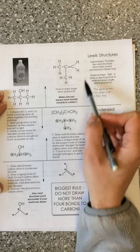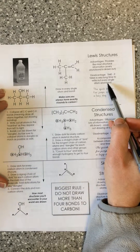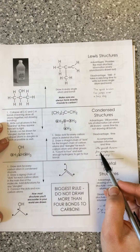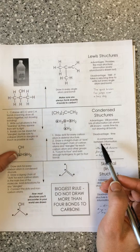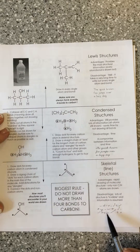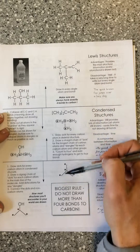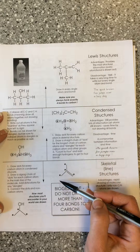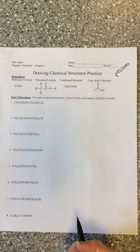As an analogy: Lewis structures are like printing — it takes a lot of time, but you write out every single atom and bond, so it's very neat and provides all the information. Condensed structures are like cursive — a compromise between information and time where you can write more quickly but still convey all the information. What we'd like to get to is truly a chemical shorthand: skeletal or line structures. That's what we're going to work through on this worksheet.